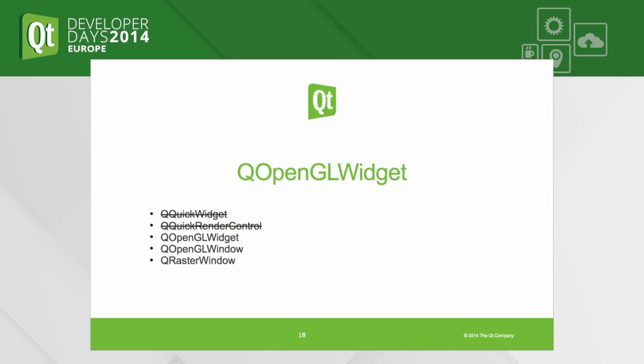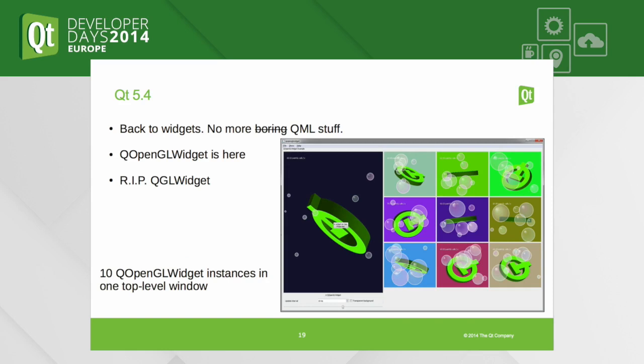Now we can say that Qt Quick and QML is done — we are finished for now, because in Qt 5.4 we finally have QOpenGLWidget. Previously, many of these old OpenGL helper classes starting with QGL — QGLFramebufferObject and so on — had been marked as obsolete and deprecated, yet QGLWidget did not have a suitable replacement until now.